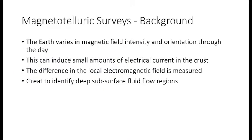The next type of geophysical method is magnetotelluric surveys, otherwise known as MT surveys. The Earth varies in magnetic field intensity and orientation throughout the day, and these variations can cause small amounts of electrical current to be induced in the crust. When you have these small induced electrical currents, you can localize an electromagnetic field. This type of survey is great for deep subsurface fluid flow regions, but can be used at multiple depths as well.